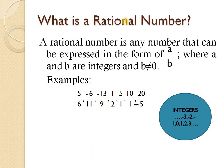First of all, we must know what a rational number is. You have probably already studied natural numbers, whole numbers, and integers in your classes. Now comes rational numbers. A rational number is any number that can be expressed in the form of a/b, where a and b are integers and b does not equal 0.